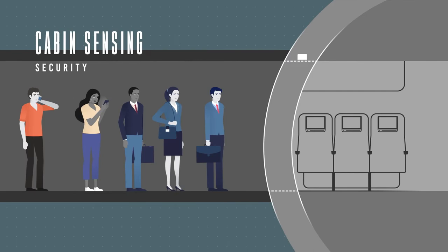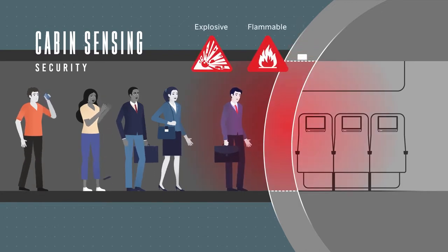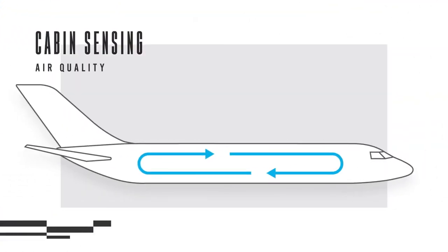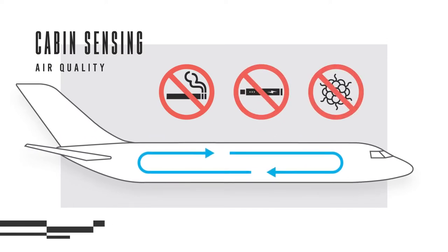Gentex is improving cabin security with a comprehensive environmental sensing system. Using a variety of methods, the system could be tuned to identify explosive or flammable components during the boarding process. The system could also monitor cabin air quality while detecting smoke, vape, and other airborne contaminants.